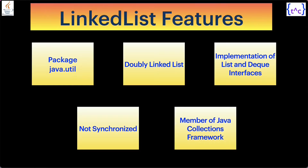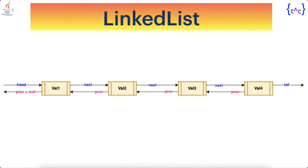Now let us have a look at the doubly linked list pictorial diagram. This is the pictorial representation of a doubly linked list. The first node holds the value val1 — it is also the head node. It holds the address of the next node, and that next node, which holds val2, also holds the address of this previous node, which happens to be val1.